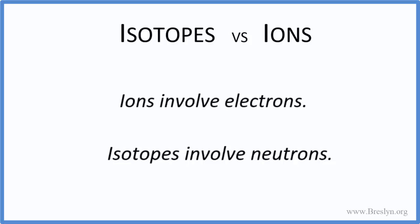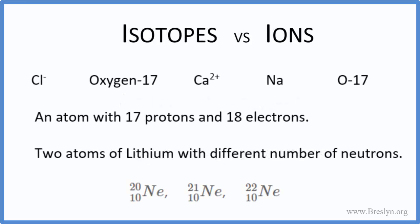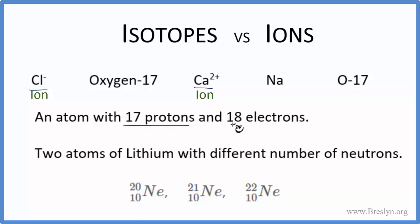Pause and figure out which of these can best be classified as ions and which can best be classified as isotopes. Anything with a charge after it, like Cl-minus — the chloride ion — that's an ion. Ca2+ — the calcium ion — that's an ion. We also know if the protons and electrons aren't equal, that's an ion as well.